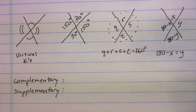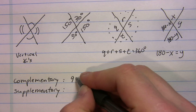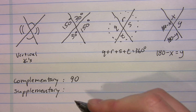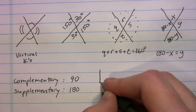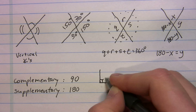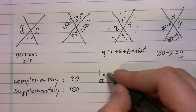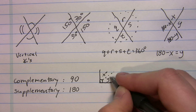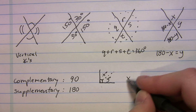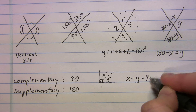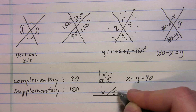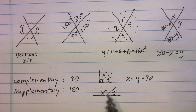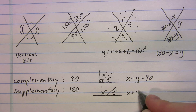Let's cover two terms: complementary and supplementary. Complementary means the angles add up to 90°. Supplementary means they add up to 180°. So if I have a right angle split into x and y, x plus y equals 90. And the earlier case where angles are on a straight line — x plus y equals 180.